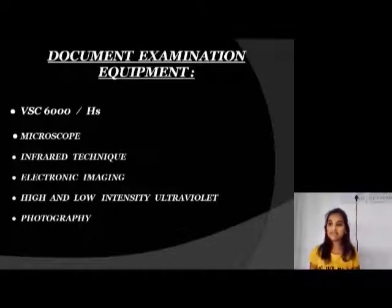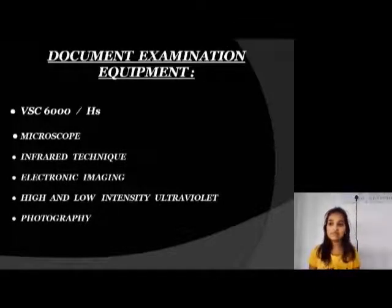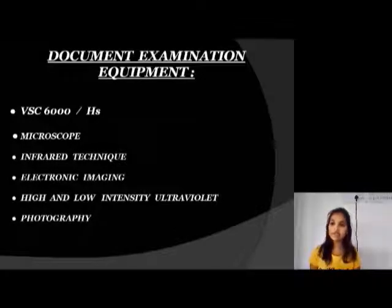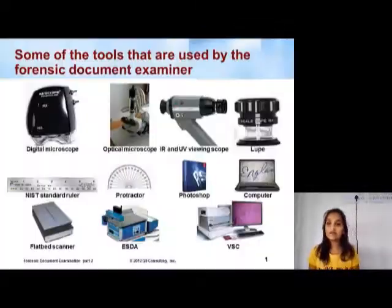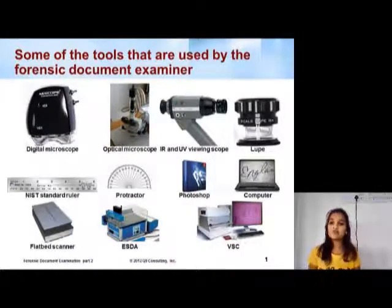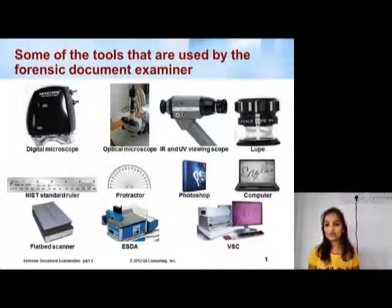Document examination equipment. These are all the equipment which we use in the examination of a document, like VSC 600, microscopy, infrared technique, electronic imaging, high and low intensity, ultraviolet, and photoshop. These are the tools used by the Forensic Document Examiner to examine questioned documents.